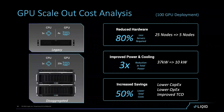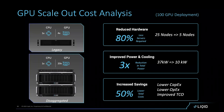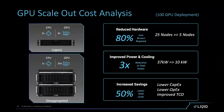We often get asked about cost — what is the cost of disaggregating the architecture? My first response is always: what is the cost of not doing it? What is the cost of leaving accelerators at 20% utilization? We have a sophisticated, easy-to-use TCO calculator to help customers understand the cost implications. Here's a real-world example: a customer needed to deploy 100 GPUs. The traditional approach was four GPUs per server, requiring 25 servers.